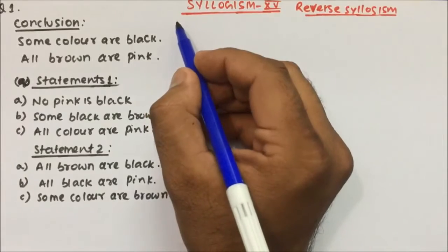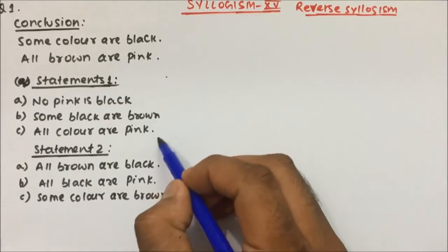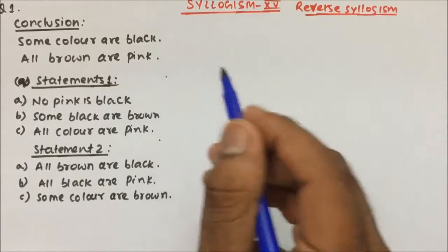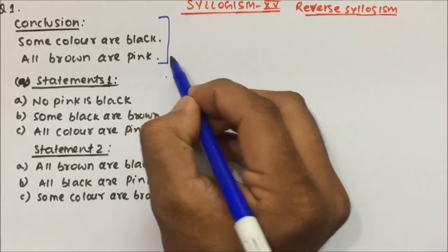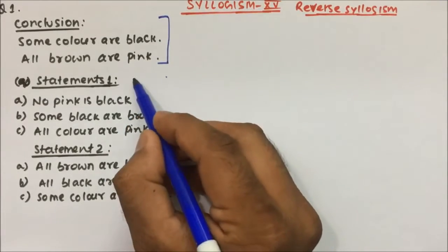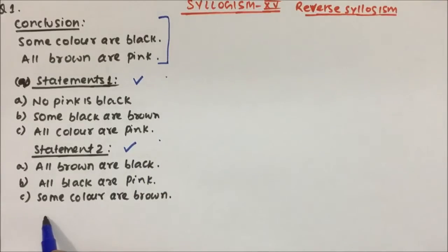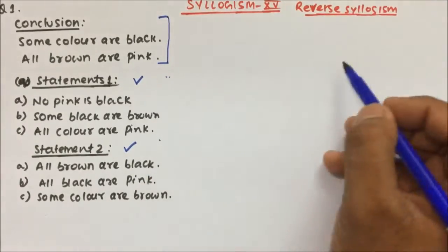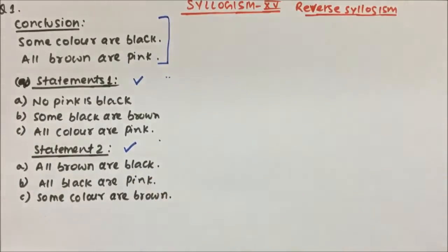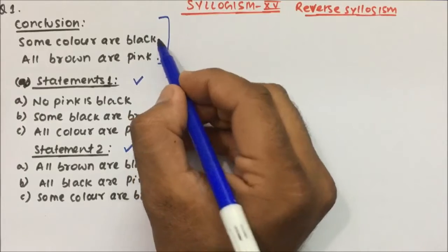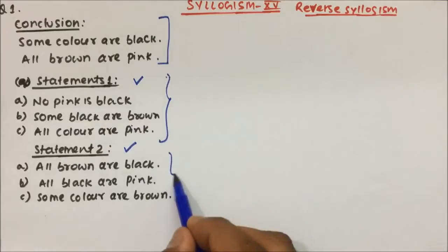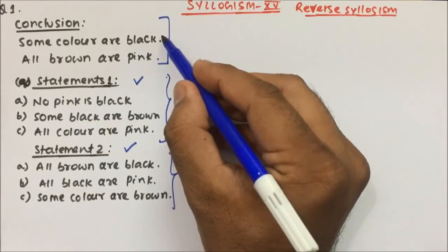In the normal syllogism question, statements were given and then we had to tell which conclusion is true or which conclusion is wrong. But in reverse syllogism, conclusions will be given followed by many statements — there may be 4 or 5 statements; I have taken only 2 statements here so that I can cover the Venn diagrams. In the exam you might have more than 3 or 4 statements. There are 2 conclusions and you have to tell whether statement 1 or statement 2 will make both conclusions true.